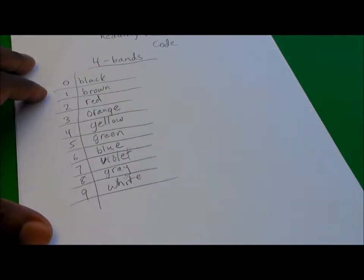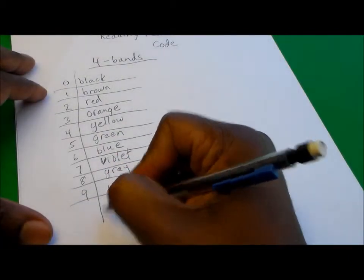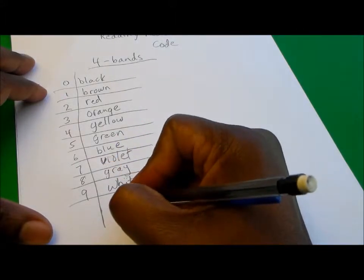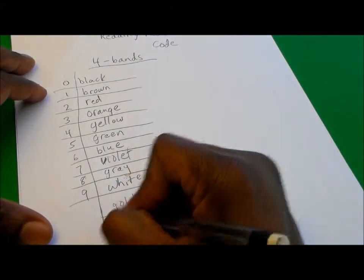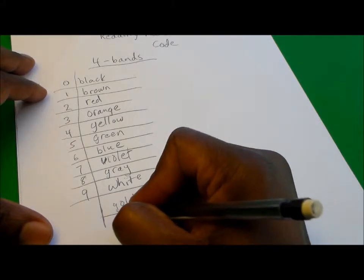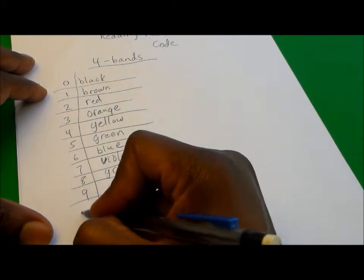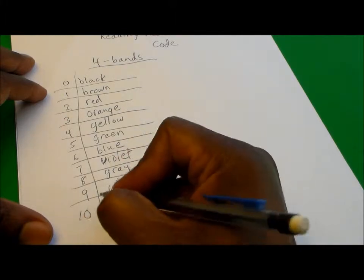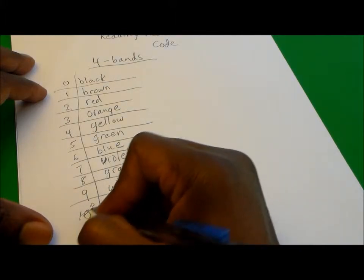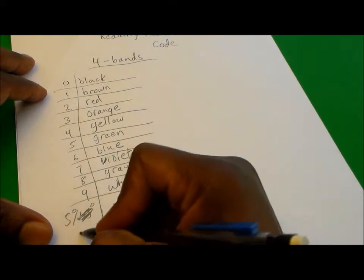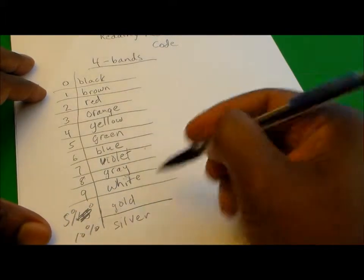You'll also see two other colors that are very common: gold and silver. Gold will be 5 percent, and silver will be 10 percent, and I'll explain that in a minute.